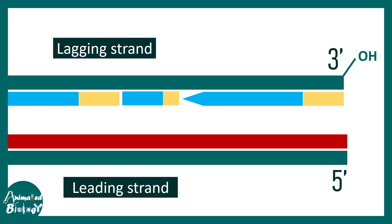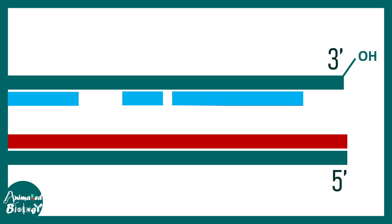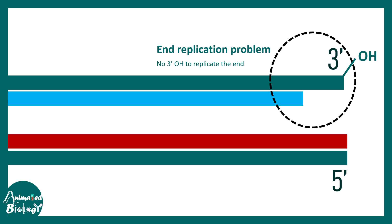Here is the problem. The primers marked here in yellow would eventually be removed and replaced by DNA strands. But the primers present at the extreme end cannot get replaced, because while this primer replacement happens a 3' OH is required to extend — but where would the 3' OH be at the extreme end? That is why the end of the chromosome doesn't have the leverage to replicate its end.